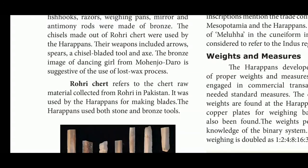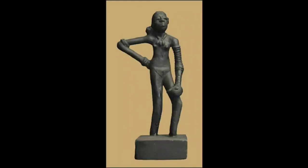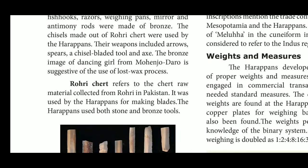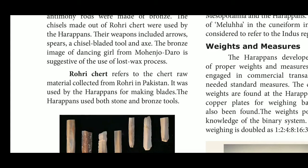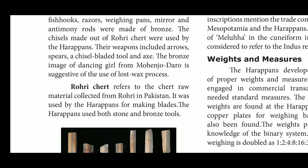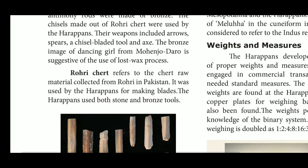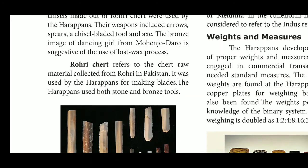The bronze image of the dancing girl from Mohanjodaro is suggestive of their use of the lost-wax process. This dancing girl figure discovered at Mohanjodaro is a beautiful example. From it we can understand the techniques of melting and making metal objects. Rohri chert refers to the raw material collected from Rohri in Pakistan and was used by the Harappans for making blades.